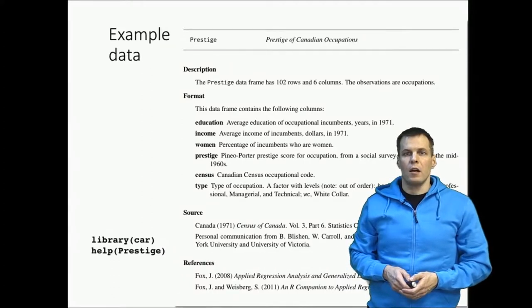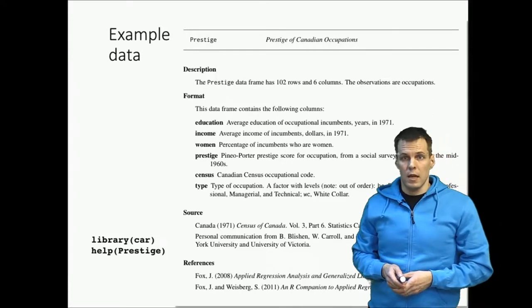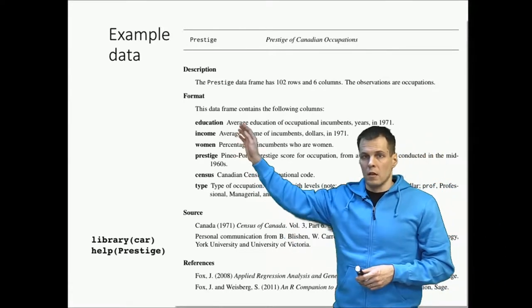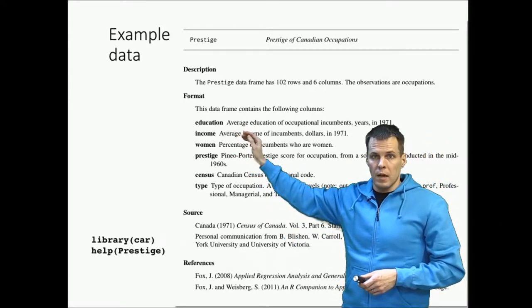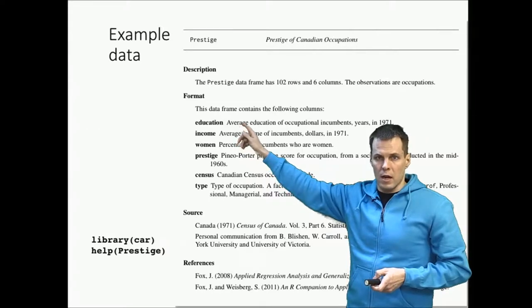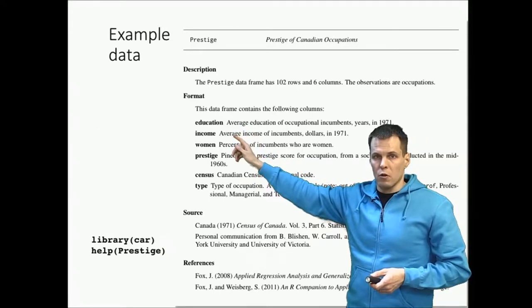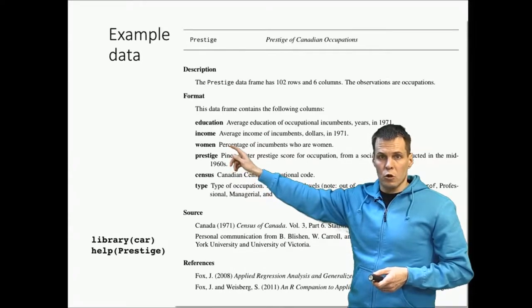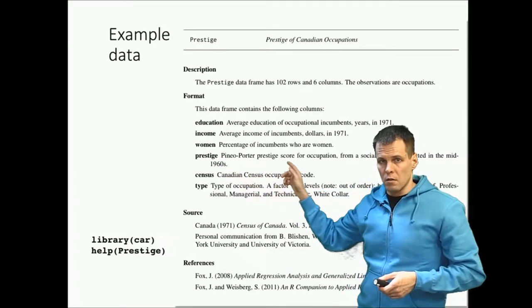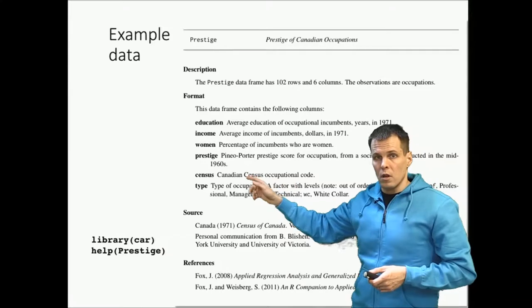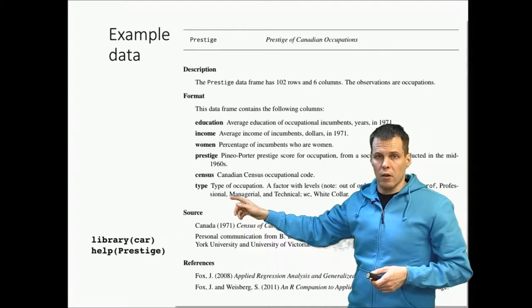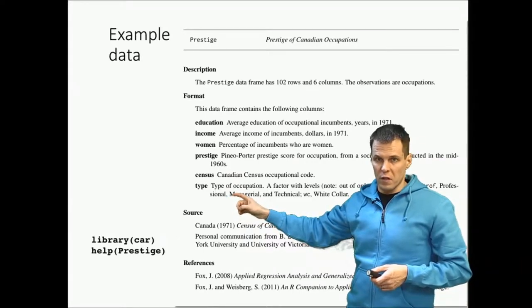This data set contains data on 102 occupations from the census of Canada in the early 70s. The variables we have are: education, which is the average number of years that a person who has this occupation has; the average income of this occupation; how many people in this occupation are women from zero to 100; a Prestige score using some kind of scale; a census code which is just an identifier; and then type, which is a categorical variable of white-collar, blue-collar and professional workers.